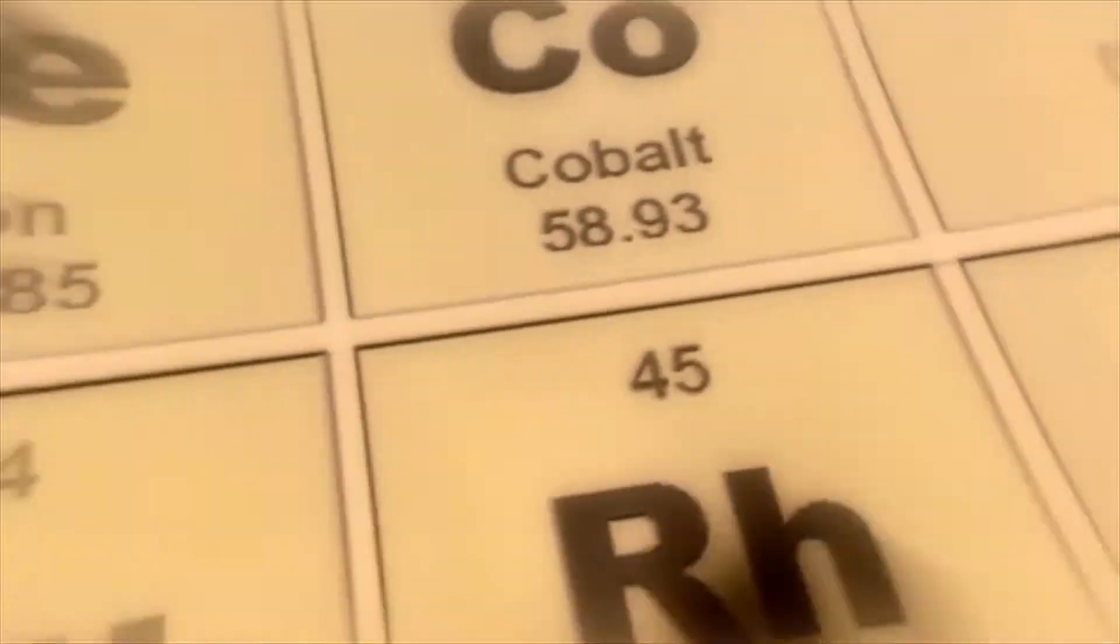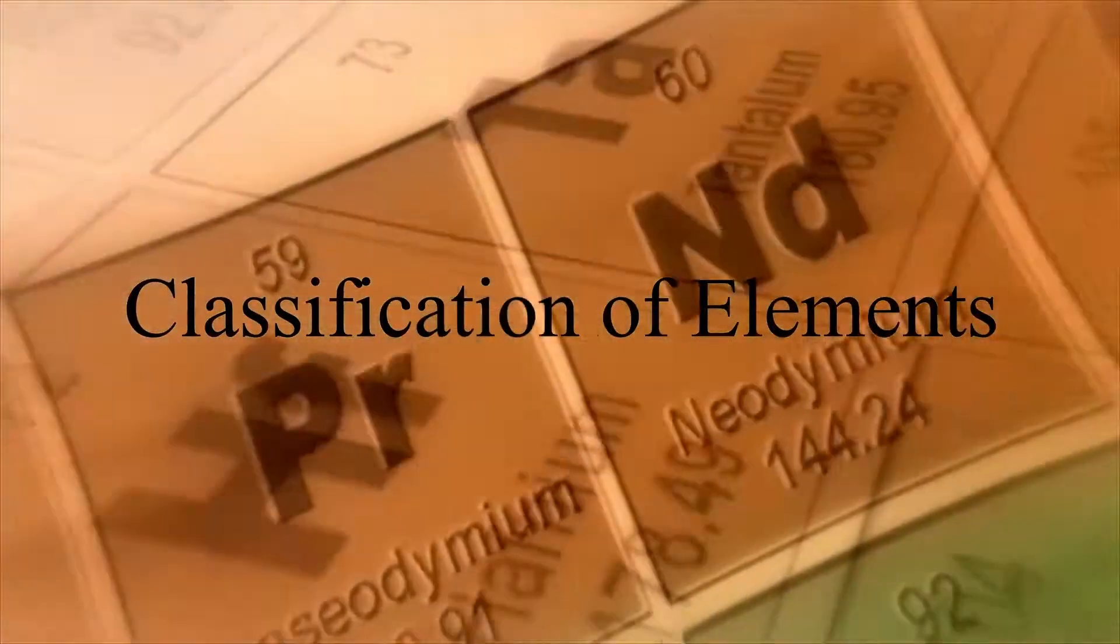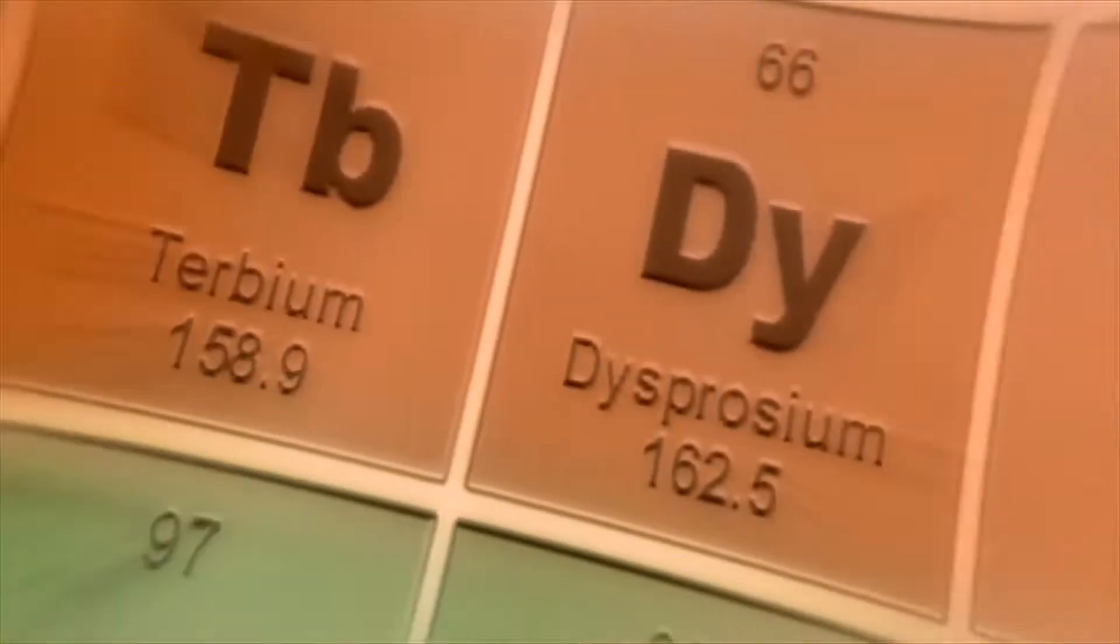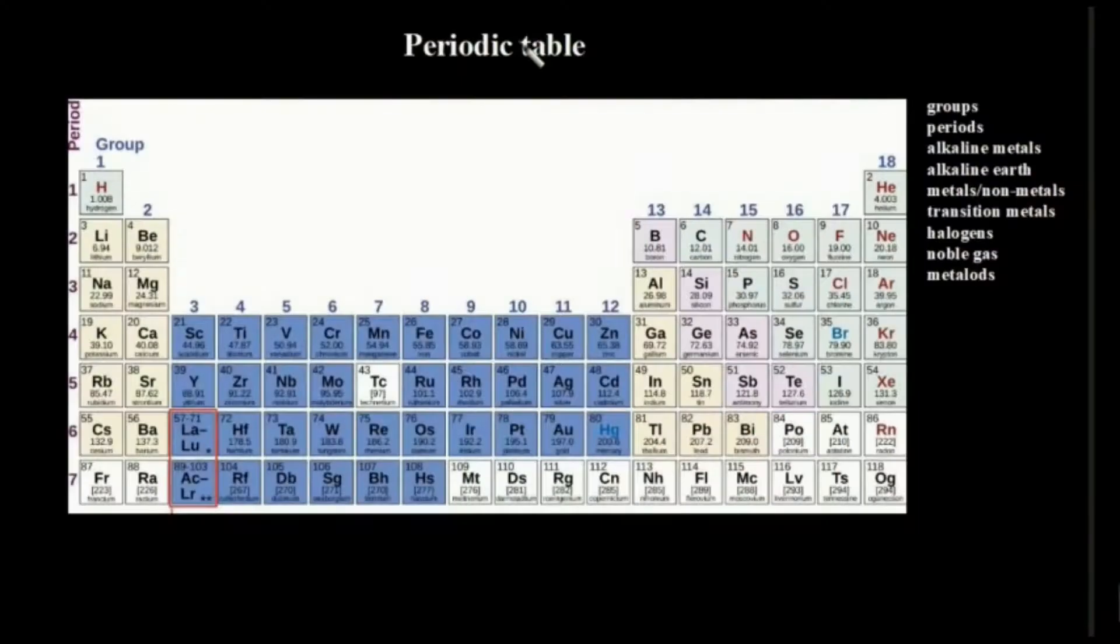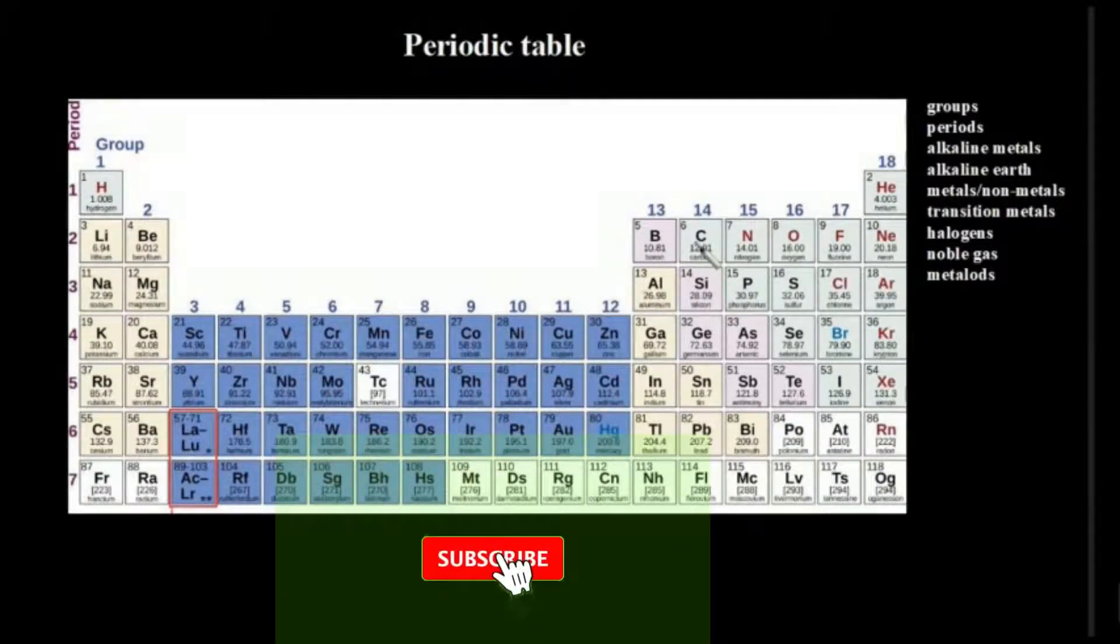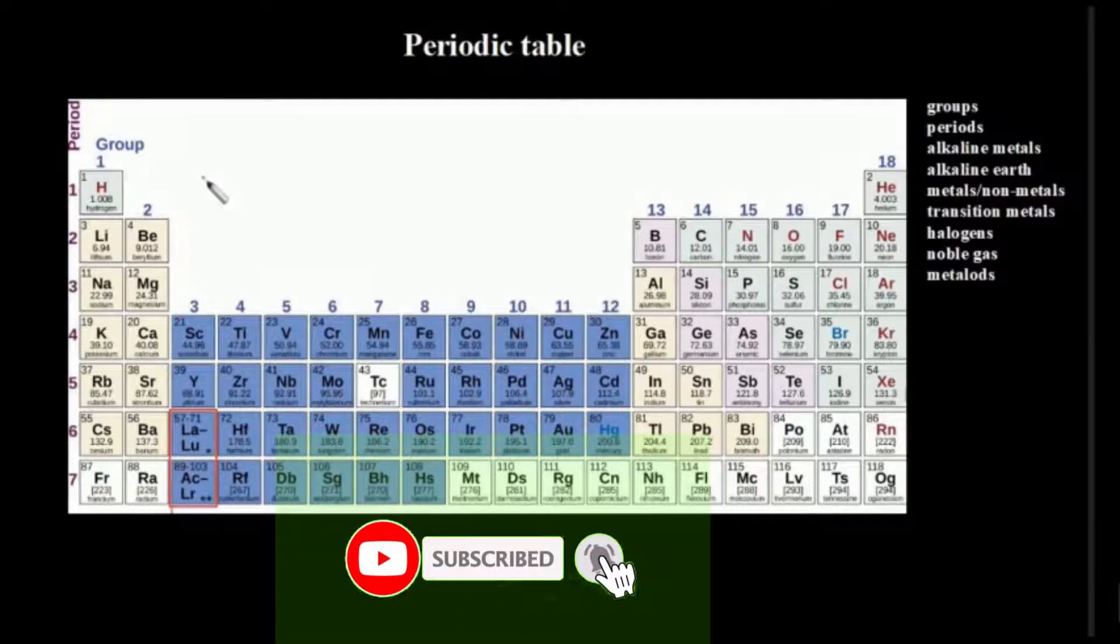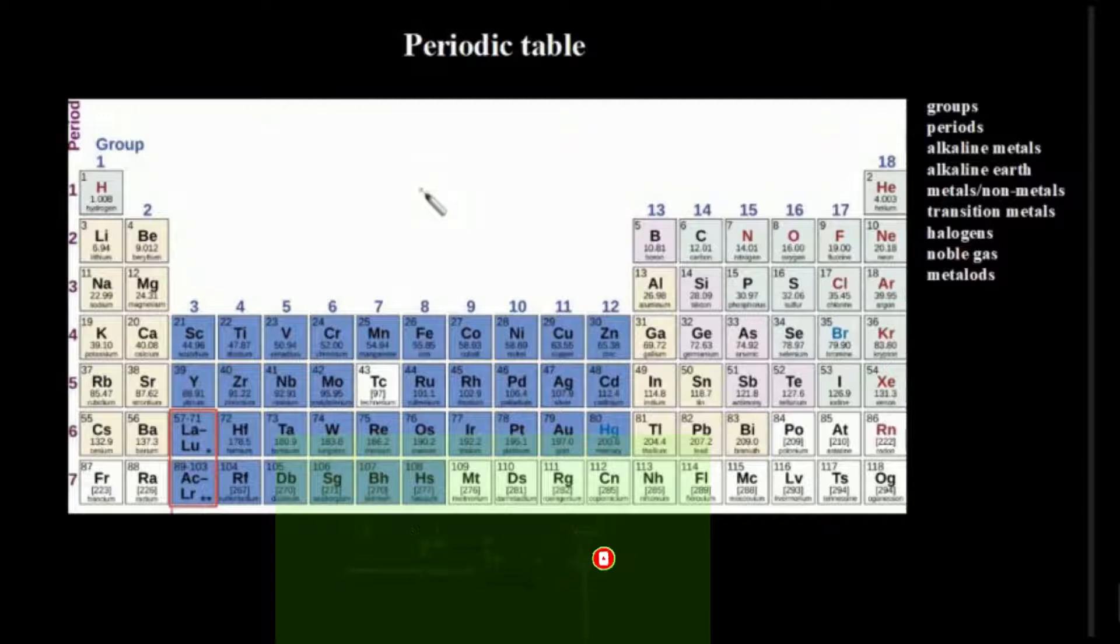Now let's talk about the periodic table and the classification of elements. Chemists observed that several elements had periodical relationships with their physical properties. So elements were classified according to their increasing atomic numbers.